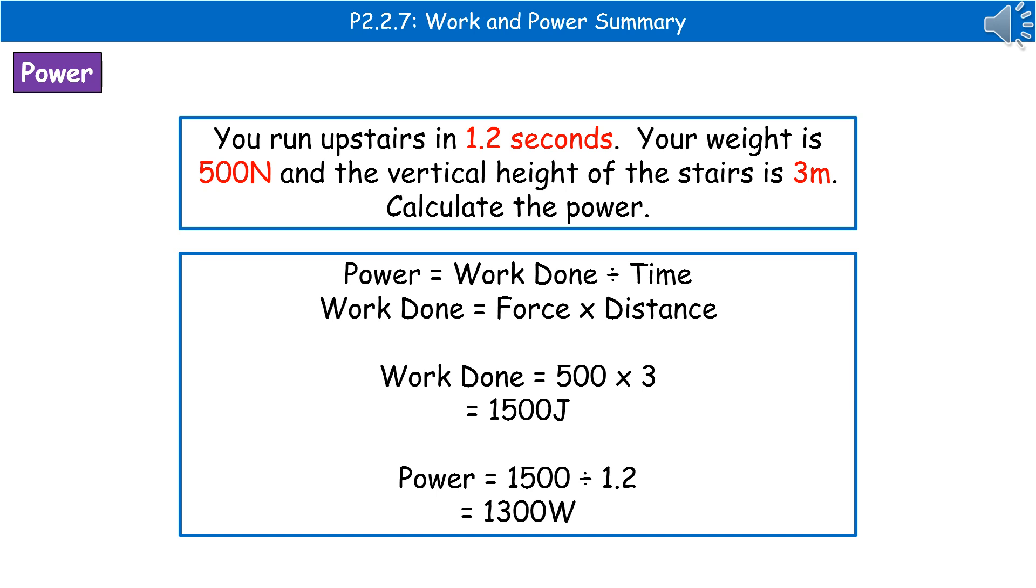We can't jump straight into calculating power, because power is work done divided by time, and we don't have work done given to us there. But we do have the ability to calculate work done, because work done is force times distance, both of which are given to us in the question. First thing we do is we calculate the work done, so 500 times by 3, and then we divide that by the 1.2 seconds, to give us our final answer of 1300 watts.